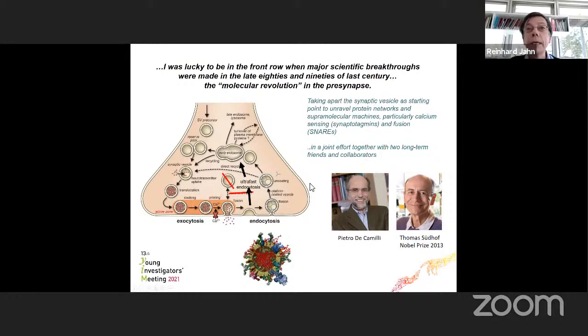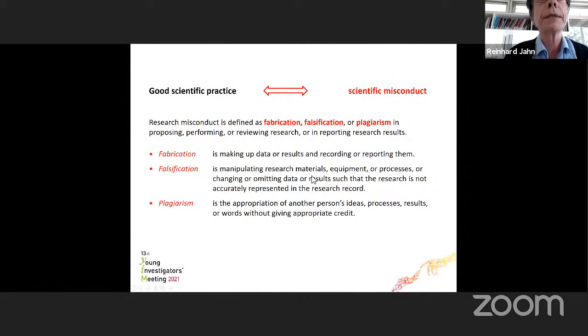So the topic of my presentation today is actually different. I would like to talk a little bit about good scientific practice. Now, the opposite of good scientific practice is scientific misconduct. And let me just briefly, for the matter of clarification, define that. This is a definition which is actually used by the NIH and the American institutions. So research misconduct is defined as fabrication, falsification, or plagiarism in proposing, performing, or reviewing research or reporting research results. Fabrication is making up data or results and recording or reporting them. Falsification is manipulating research materials, equipment, or processes, or changing or omitting data or results such that the research is not accurately represented in the research record. And plagiarism is the appropriation of another person's ideas, processes, results, or words without giving appropriate credit.